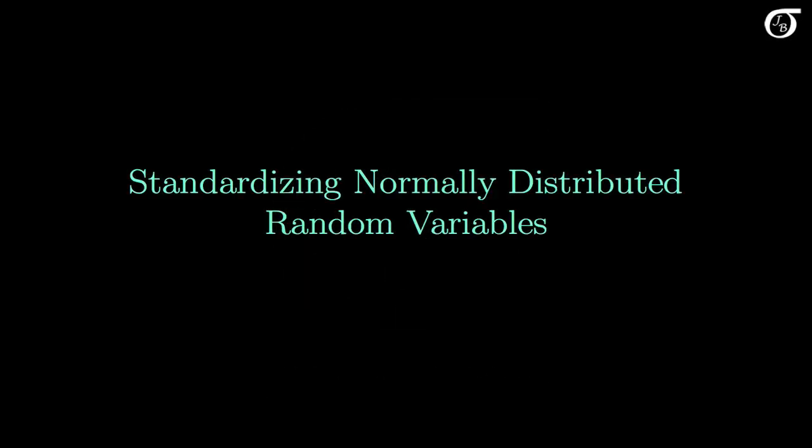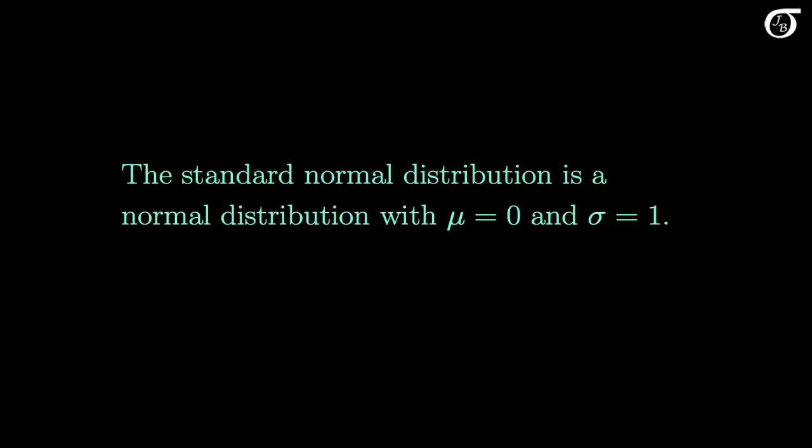Let's look at standardizing normally distributed random variables. The standard normal distribution is a normal distribution with a mean of 0 and a standard deviation of 1. It comes up frequently in probability calculations and statistical inference, and we can convert a random variable having a normal distribution with any mean and standard deviation into one that has the standard normal distribution. We deal with the standard normal distribution very often in statistics.